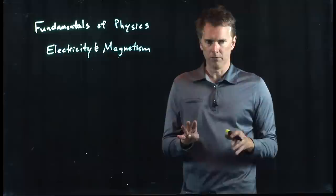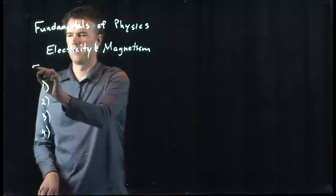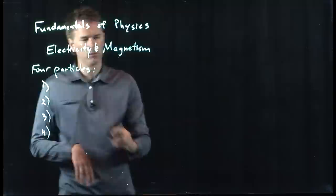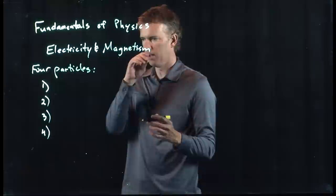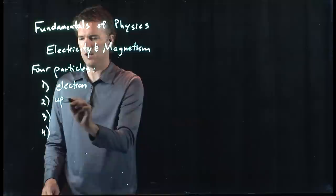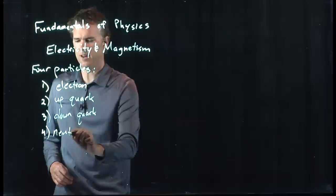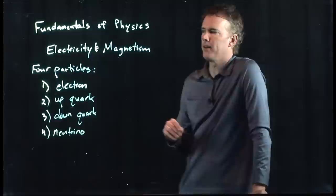Let's back up for a second and talk about the four particles we mentioned earlier and the four forces we need to worry about. There are four particles at normal everyday energies. When you get to high energy physics, you can add more particles, but there are four we need to worry about in our local environment: the electron, the up quark, the down quark, and the neutrino. These are the four basic particles you need to worry about.